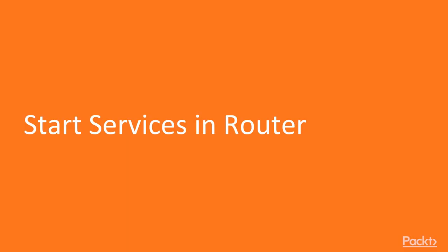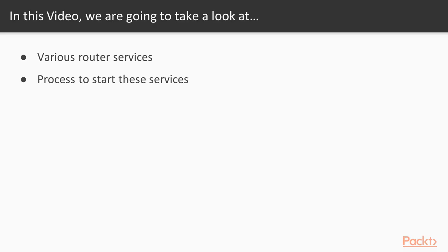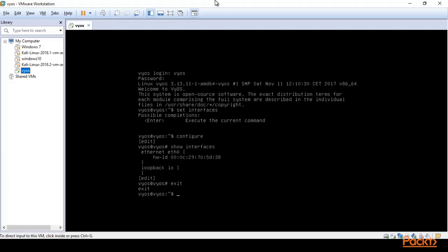In this video we are going to look at a couple of points. First, we will learn about the various router services and how you can start these services inside a router. In the previous video we successfully downloaded and installed VyOS inside VMware Workstation. Now we will cover how you can start services, assign an IP address, and connect your VyOS with Kali Linux.